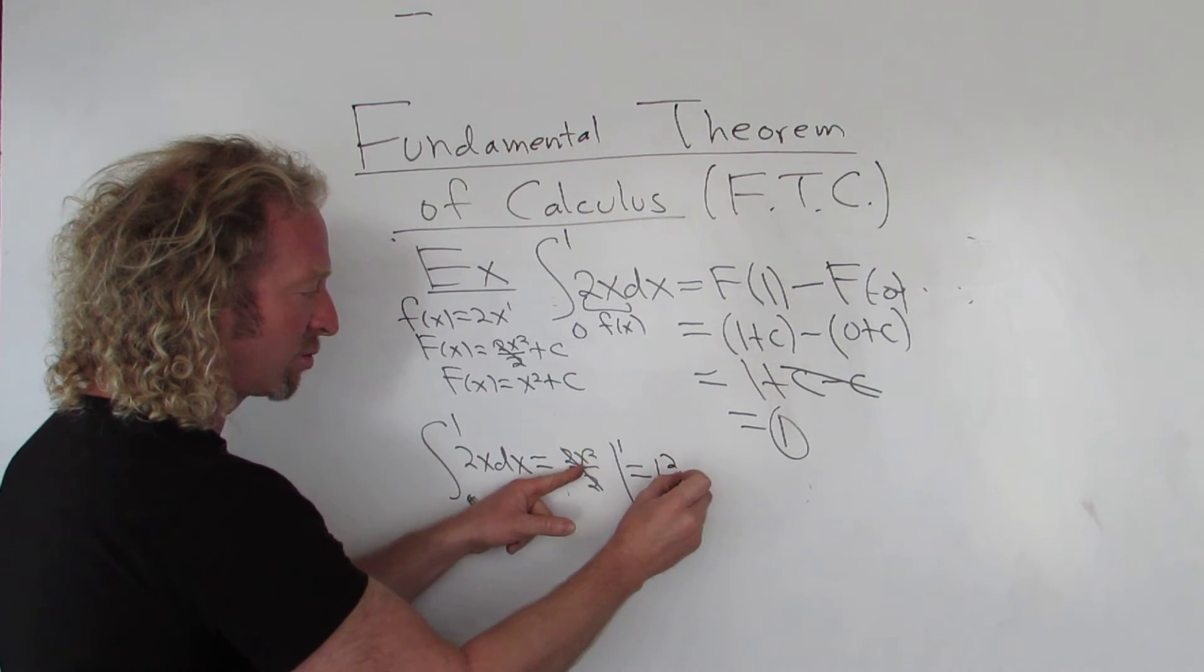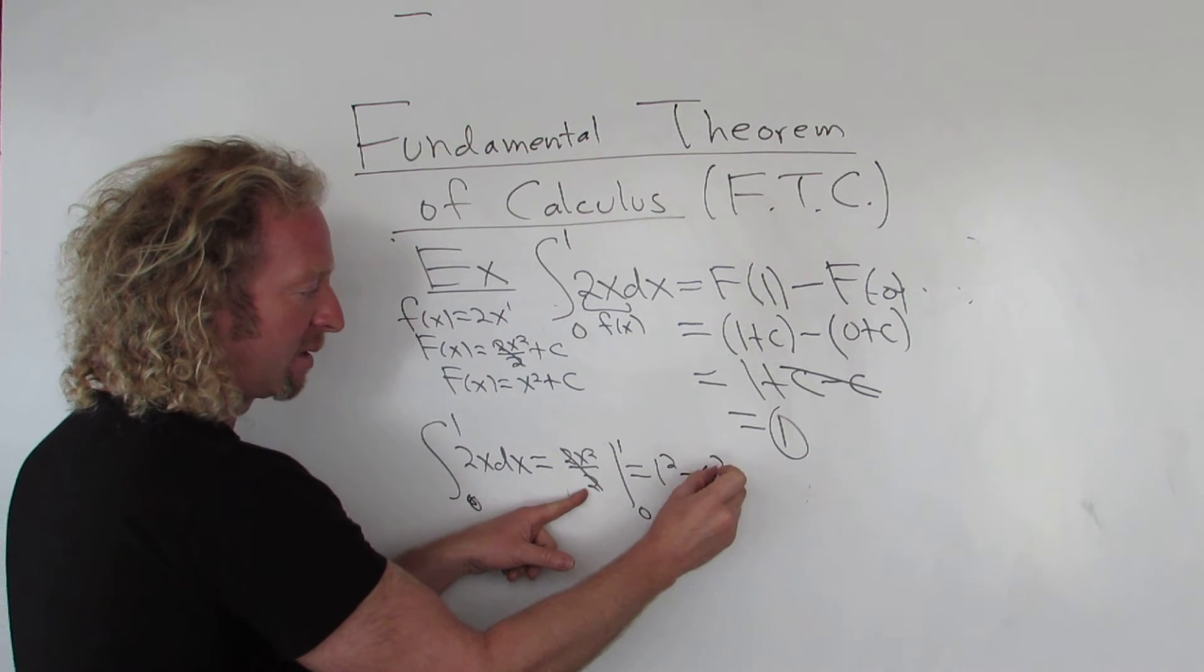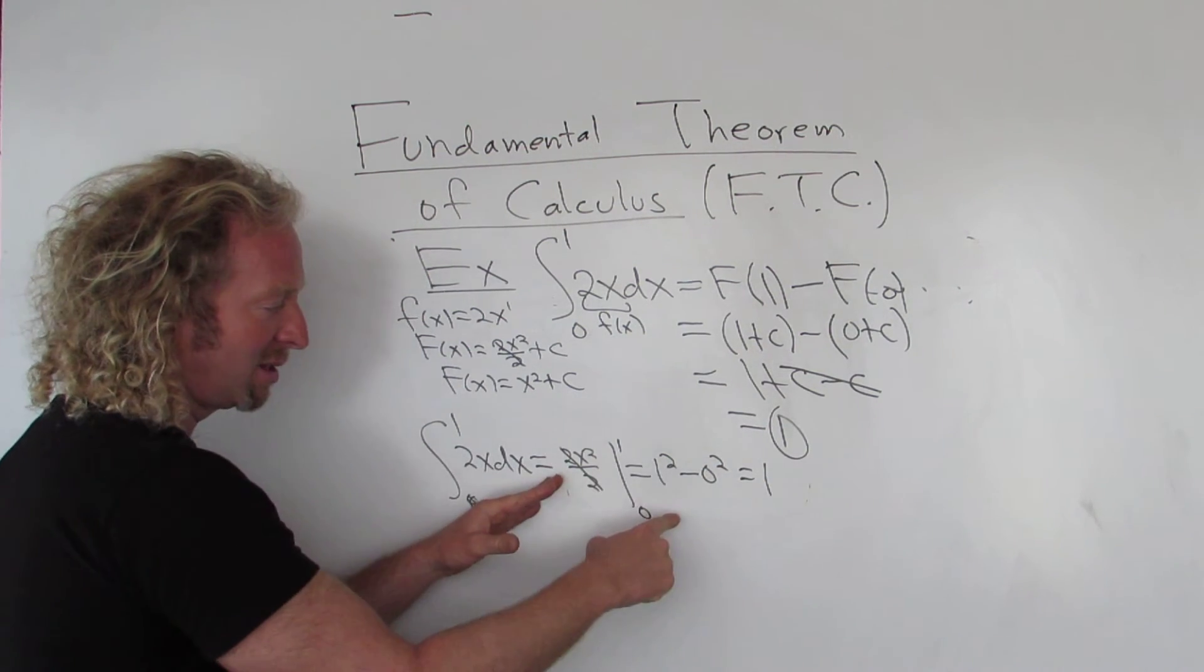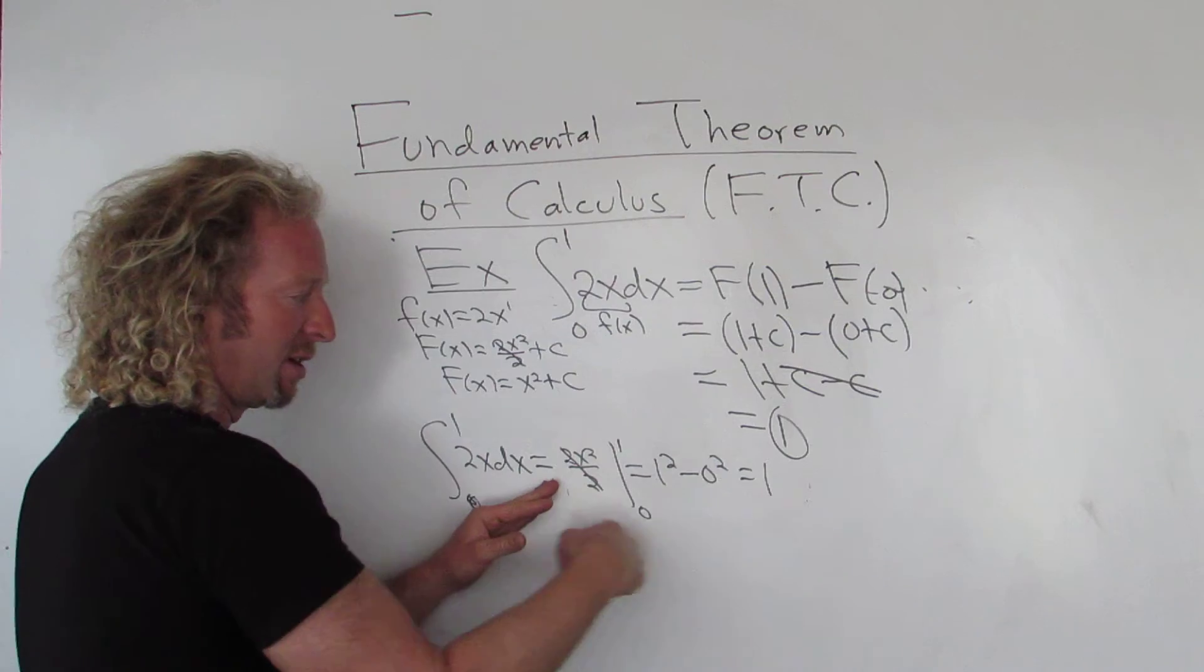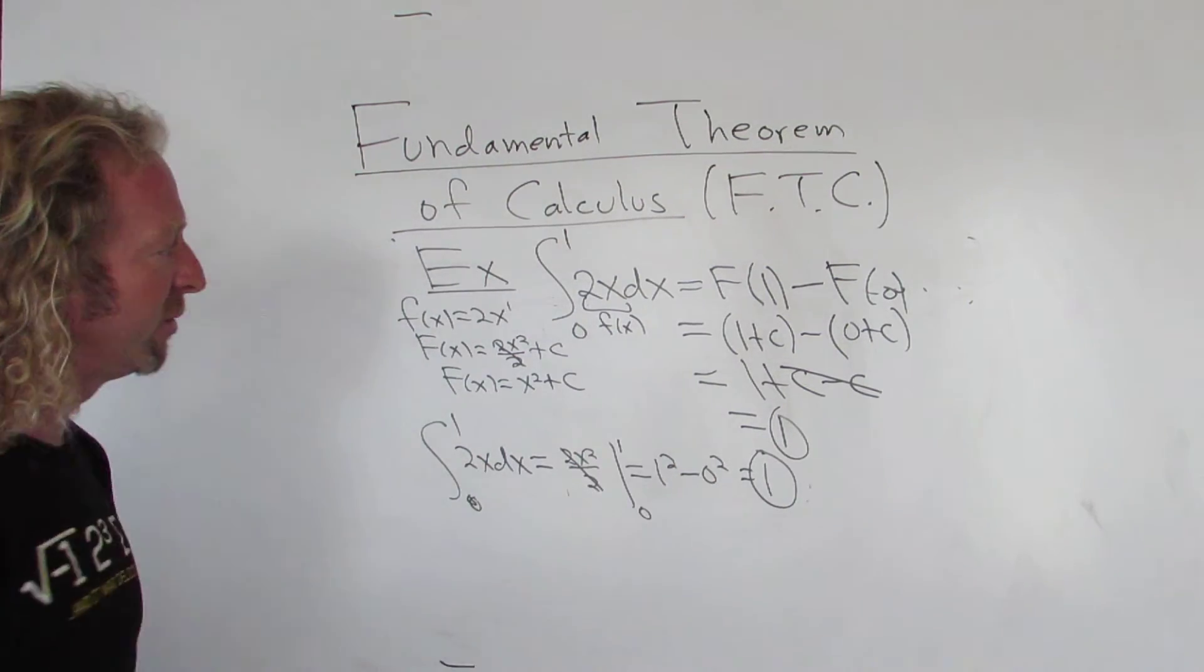And then you just plug in the 1, so you get 1 squared. You subtract, and you plug in the 0. And so you get 1. So you integrate, don't write the c, plug in the number, subtract, plug in the number, and that's the answer. That's typically how people do it.